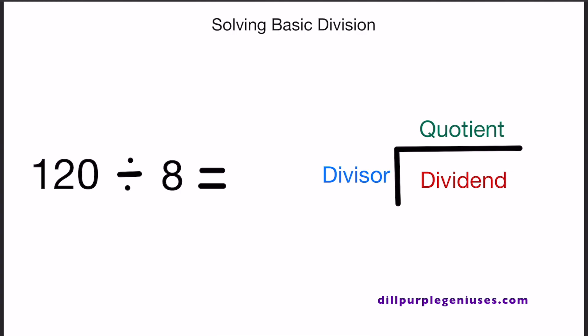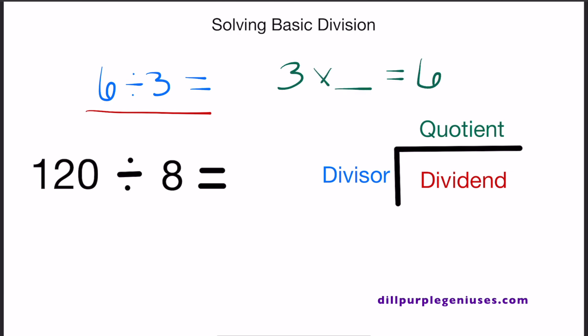For example, what if you had 6 divided by 3? When you think of the opposite of this equation, you think of 3 times what equals 6. If you have memorized your multiplication table, you'll remember that 3 times 2 equals 6. So when you do 6 divided by 3, you come out with 2.